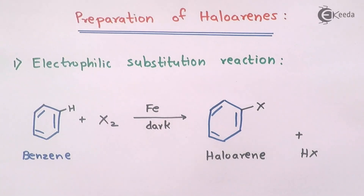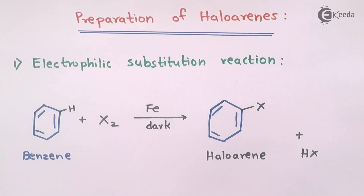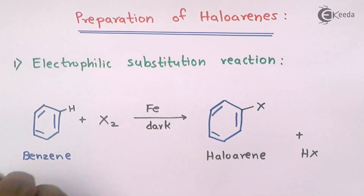The product we obtain is basically a halogen-substituted benzene, and this is known as a monohalogen derivative of arene.